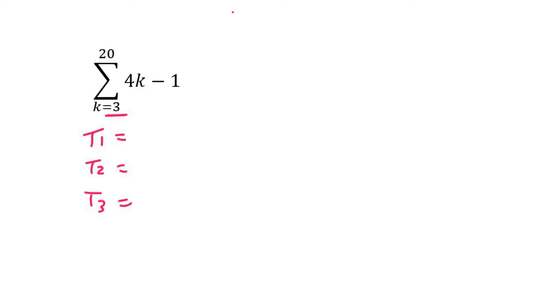To find term one, you are simply going to start with whatever number you have here. So it'll be four times three minus one, which is 11.